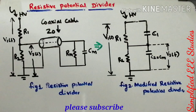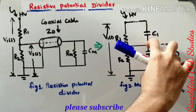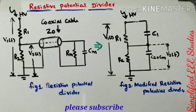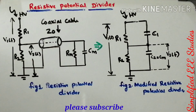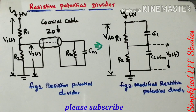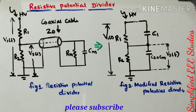The low voltage arm is then directly connected to the measurement device. This is how to do the compensation. While choosing the values of C1 and C2 you should be very careful, otherwise it may lead to over-compensation or under-compensation. Our aim is to achieve proper compensation.